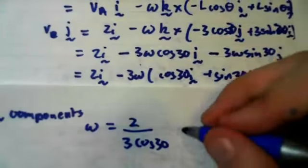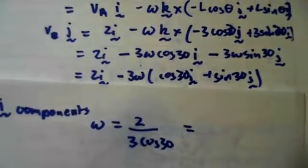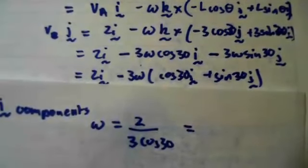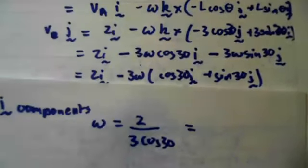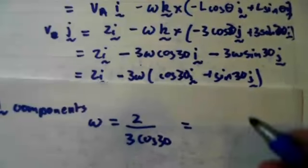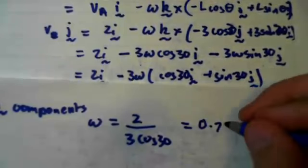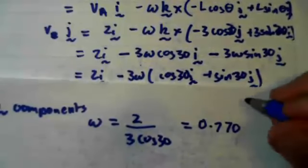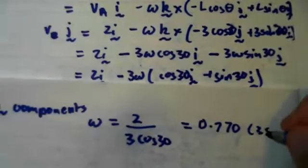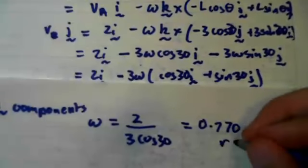And if we plug that into our calculator, we end up getting 0.7698 etc., but we're going to do that to three significant figures, so 0.770. Now that's in radians a second.